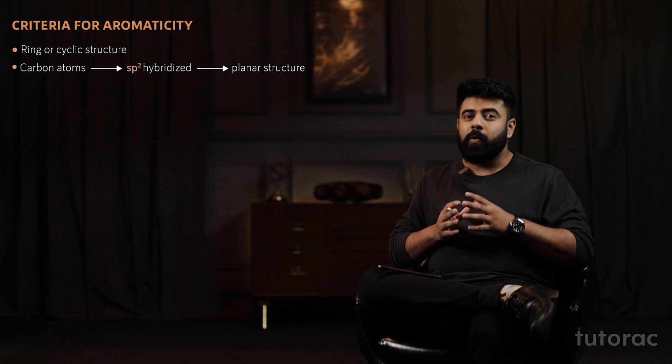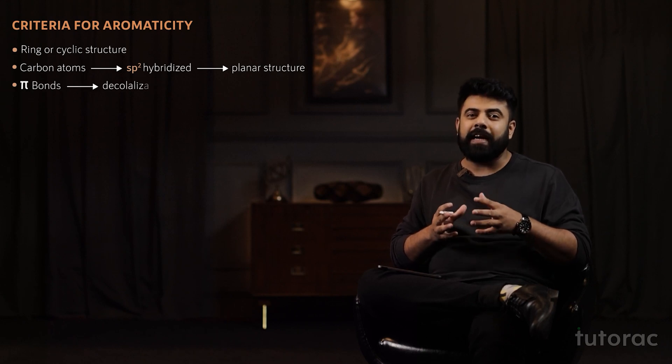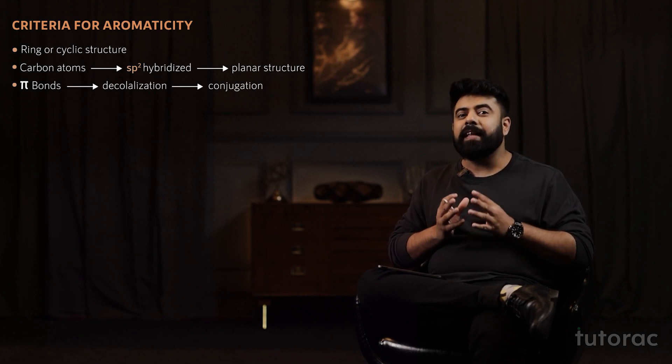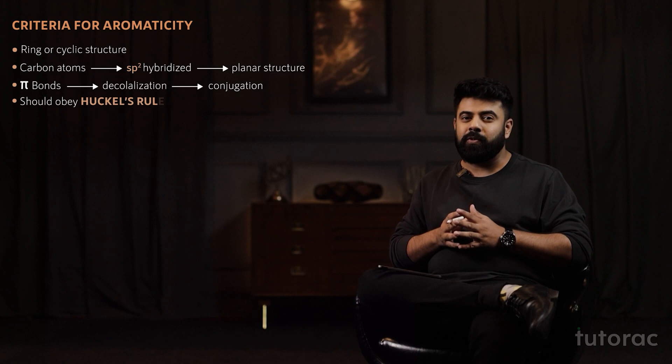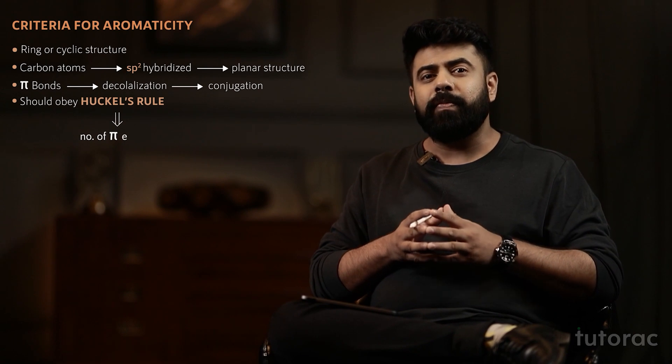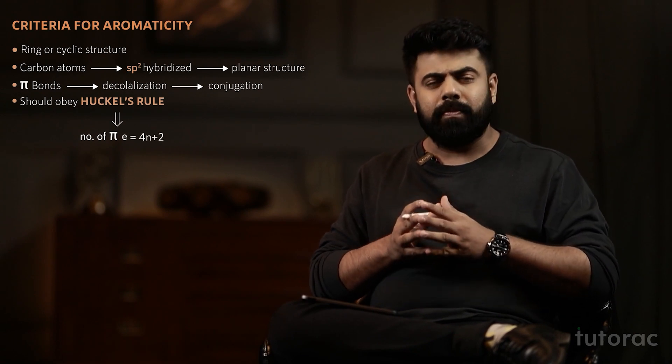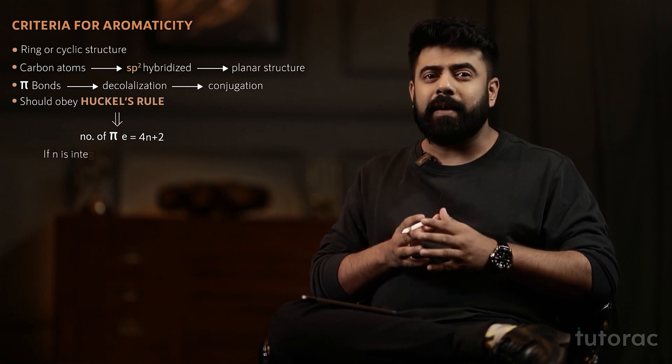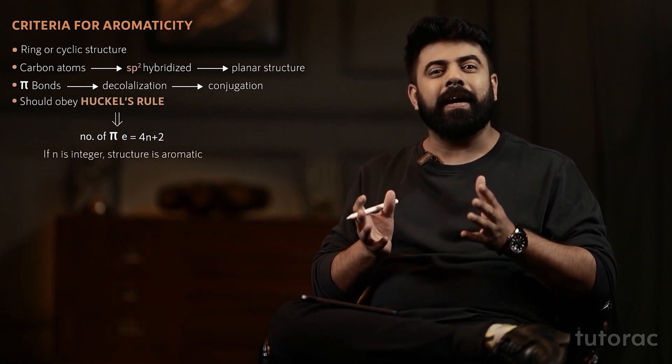To understand that, there are certain criteria for aromaticity. The first rule says that there should exist a ring-like or cyclic structure. At the same time, all the carbon atoms should be sp2 hybridized, which means it should have a planar structure. There should be pi bonds, meaning there should be delocalization or conjugation. And the last rule — it should obey Huckel's rule. Huckel's rule states that the number of pi electrons should be equal to 4n + 2, and if the value of n comes out to be an integer, it is said to be an aromatic compound.